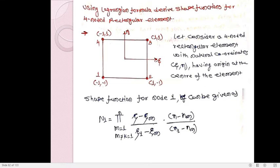Let us consider a four-noded rectangular element with natural coordinates ξ and η having origin at the center of the element. As discussed in the previous video, when we use ξ–η coordinates, the origin is at the center and the values vary from −1 to +1. So: node 1 has (ξ1, η1) = (−1, −1); node 2 has (1, −1); node 3 has (1, 1); and node 4 has (−1, 1).